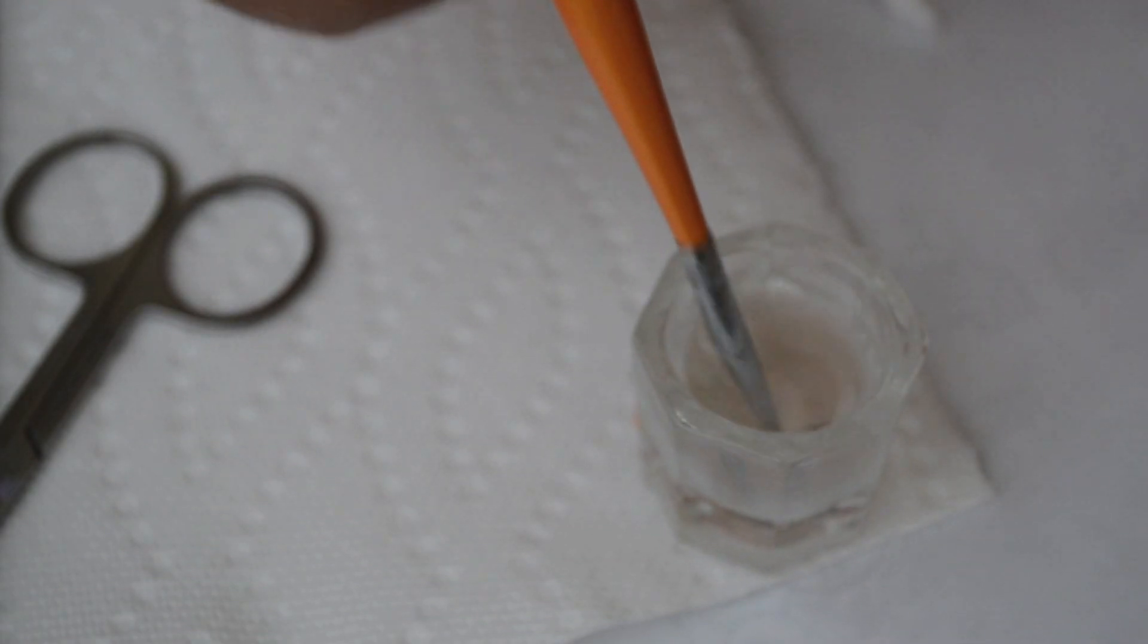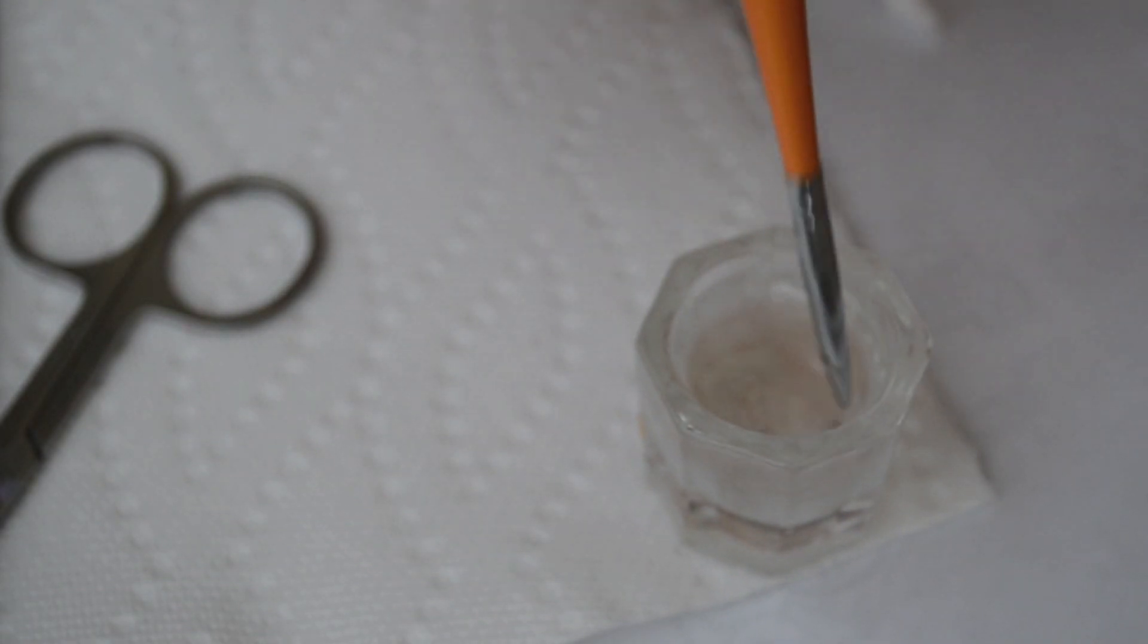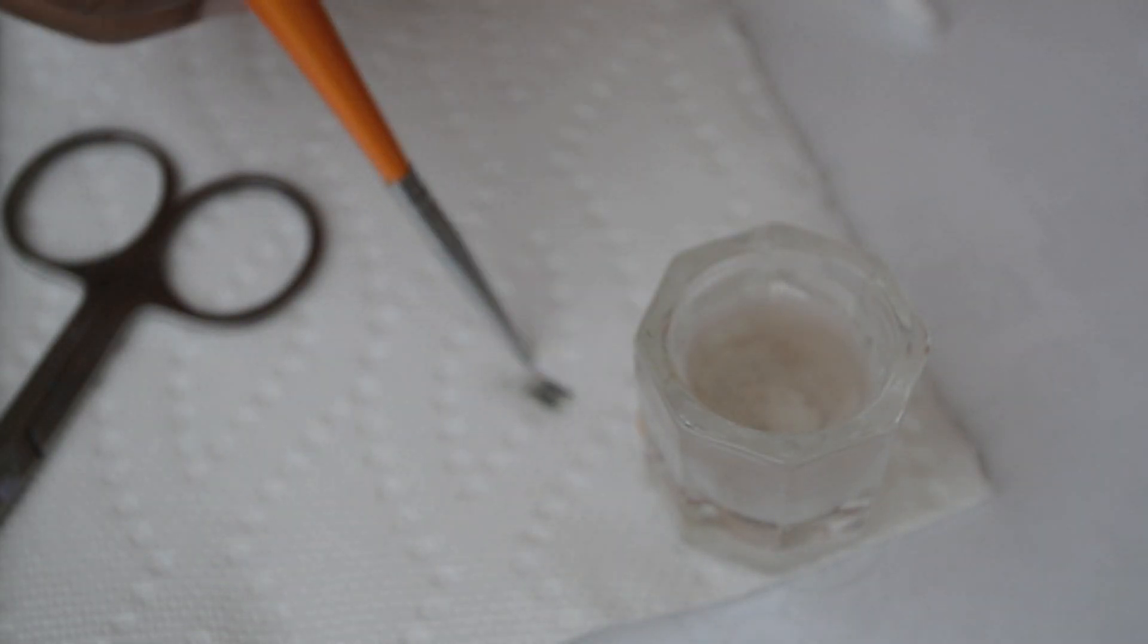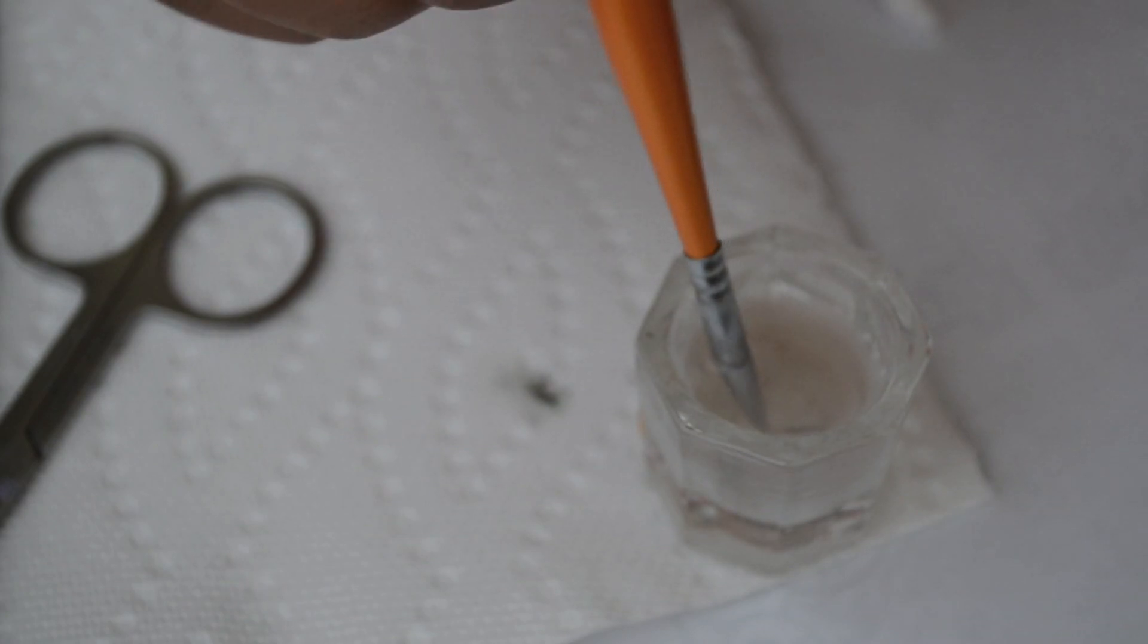For my nail art brushes, I place them into the nail polish remover and move them around. Then I wipe them on the paper towel every now and then until all the nail polish is off the brush.